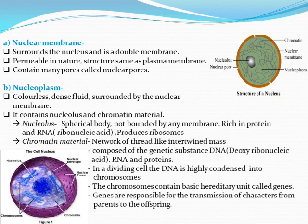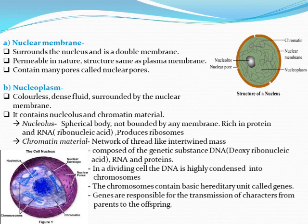Looking at the nucleus in detail: this slide shows only the nucleus, not the full cell. The outer brown-colored part is the nuclear membrane. This is a double membrane — two layers — which is a very important feature. The nuclear membrane surrounds the nucleus and is permeable in nature, allowing substances to move in and move out. Its structure is the same as the plasma membrane.